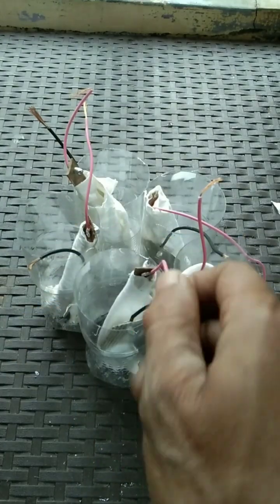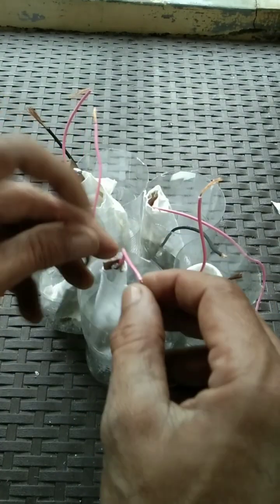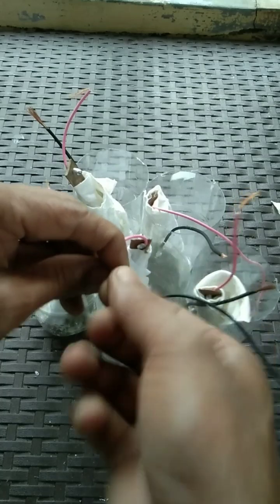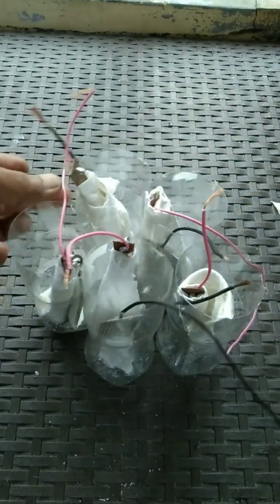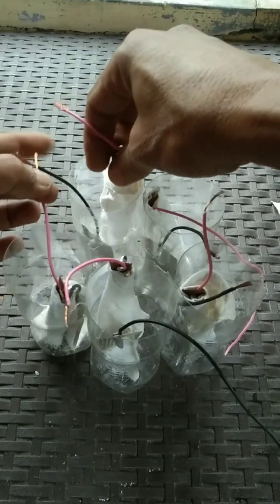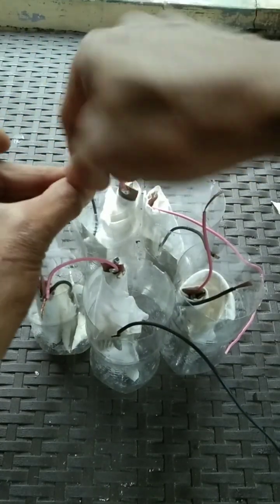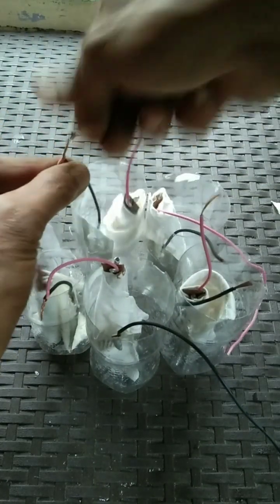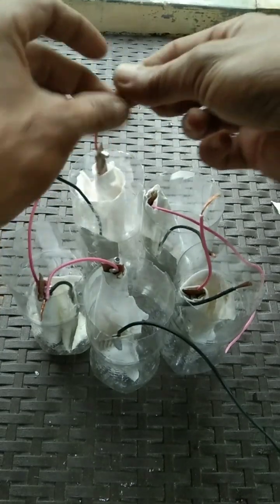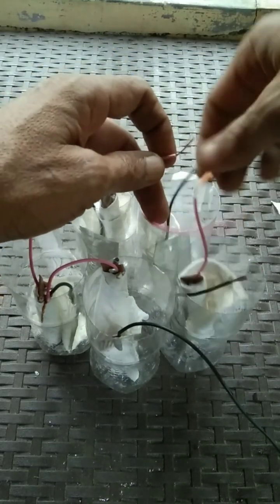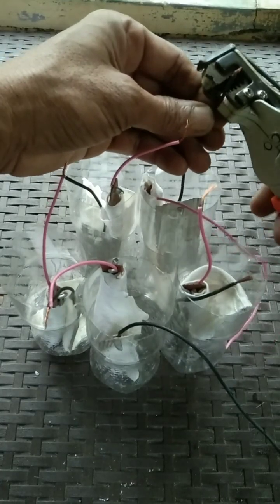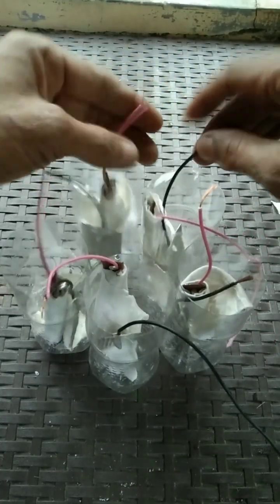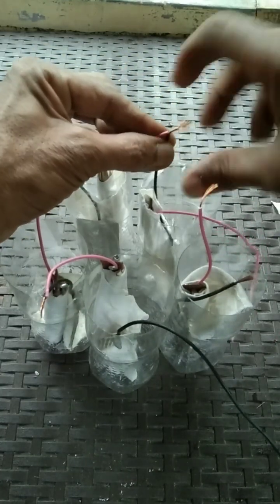But first we need to leave this open, that negative, that long black wire. We need to leave that open because that will be our negative output later. You will find out. So just connect positive to negative, positive to negative, positive to negative, positive until you reach the last cell.